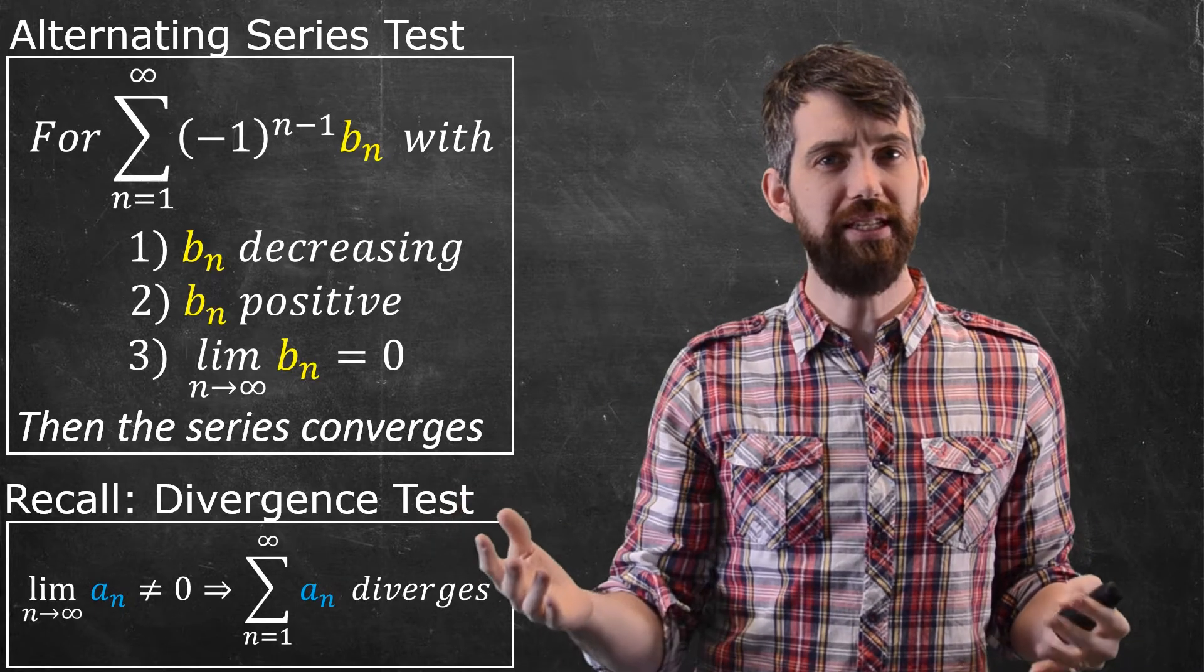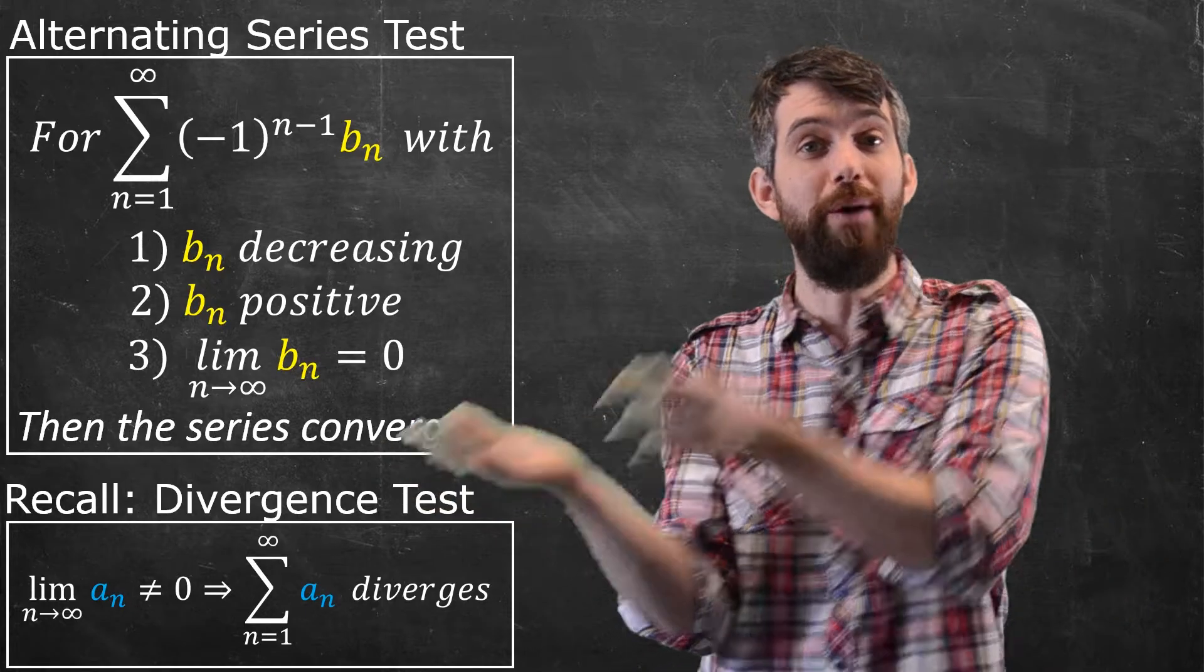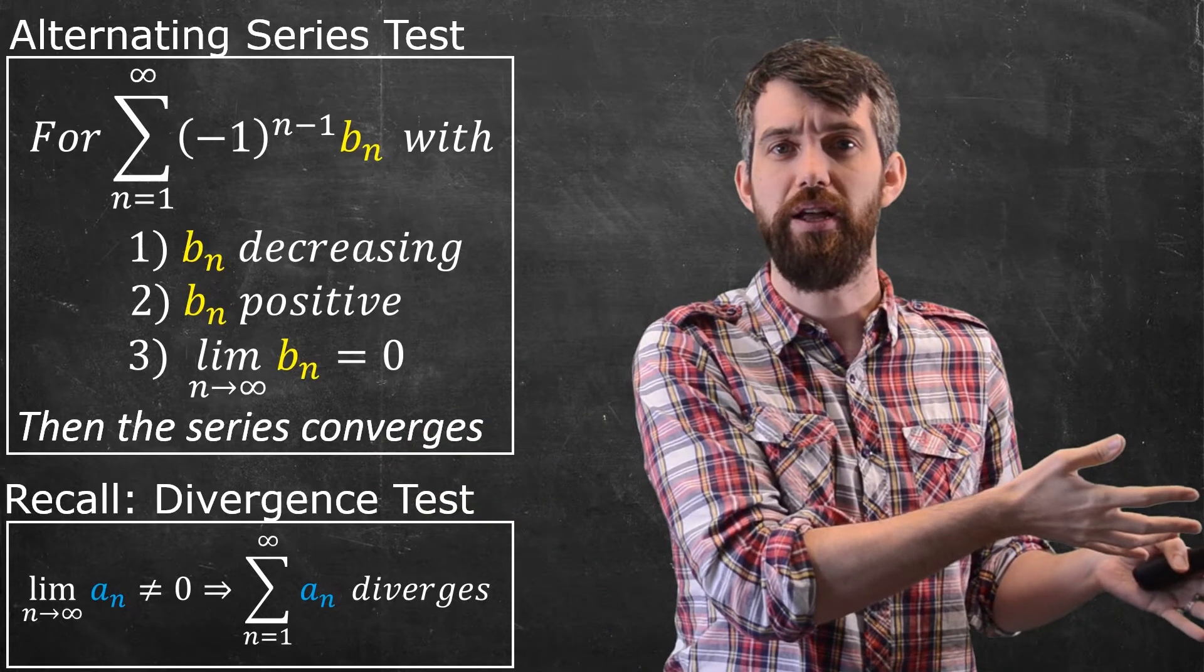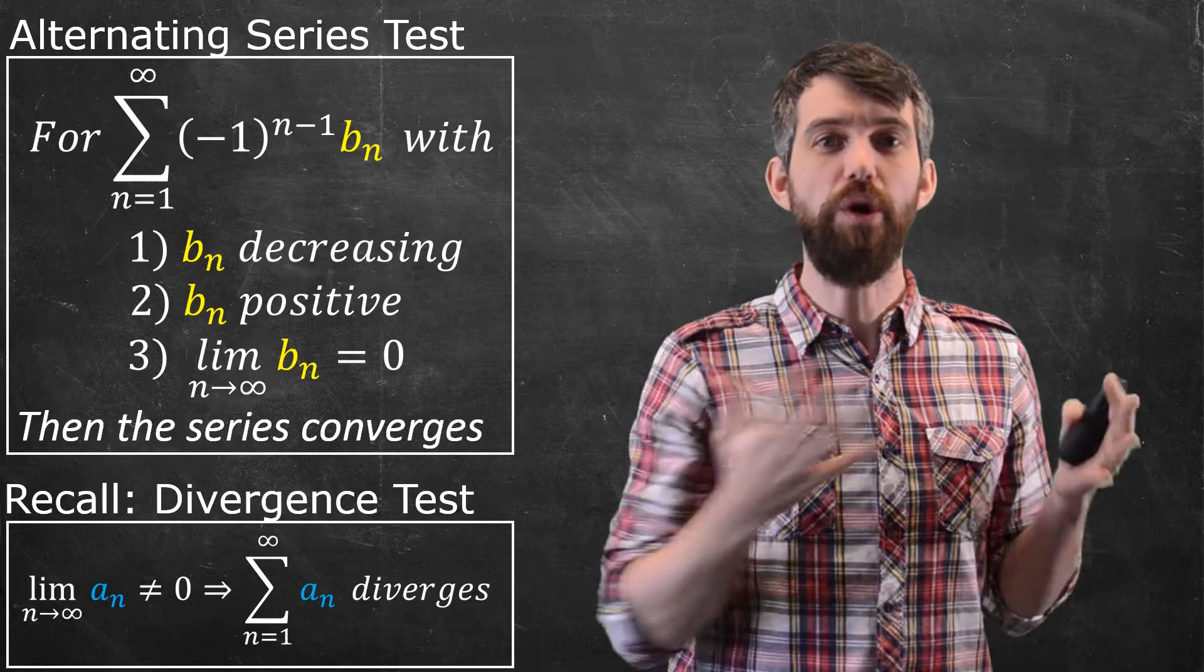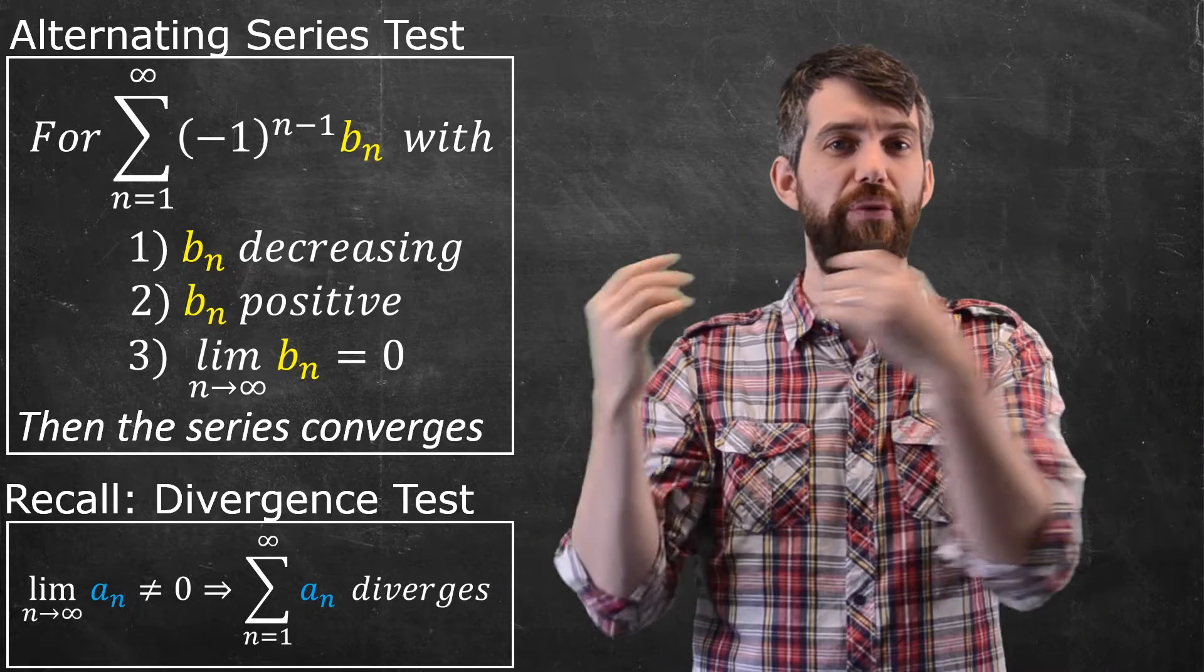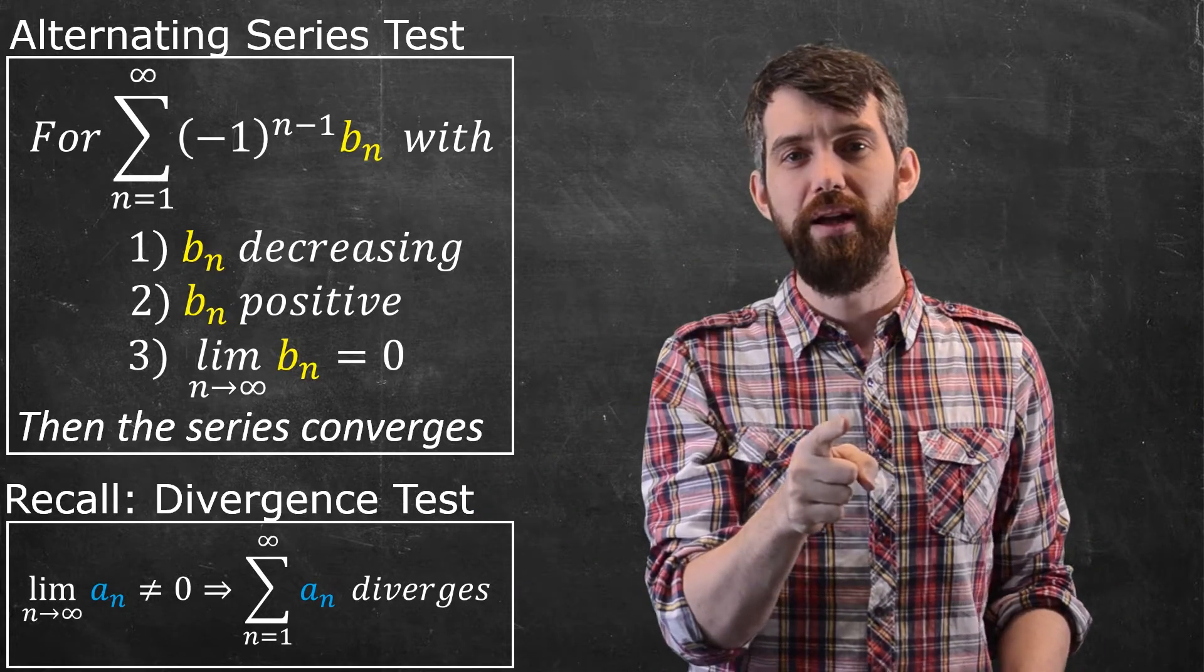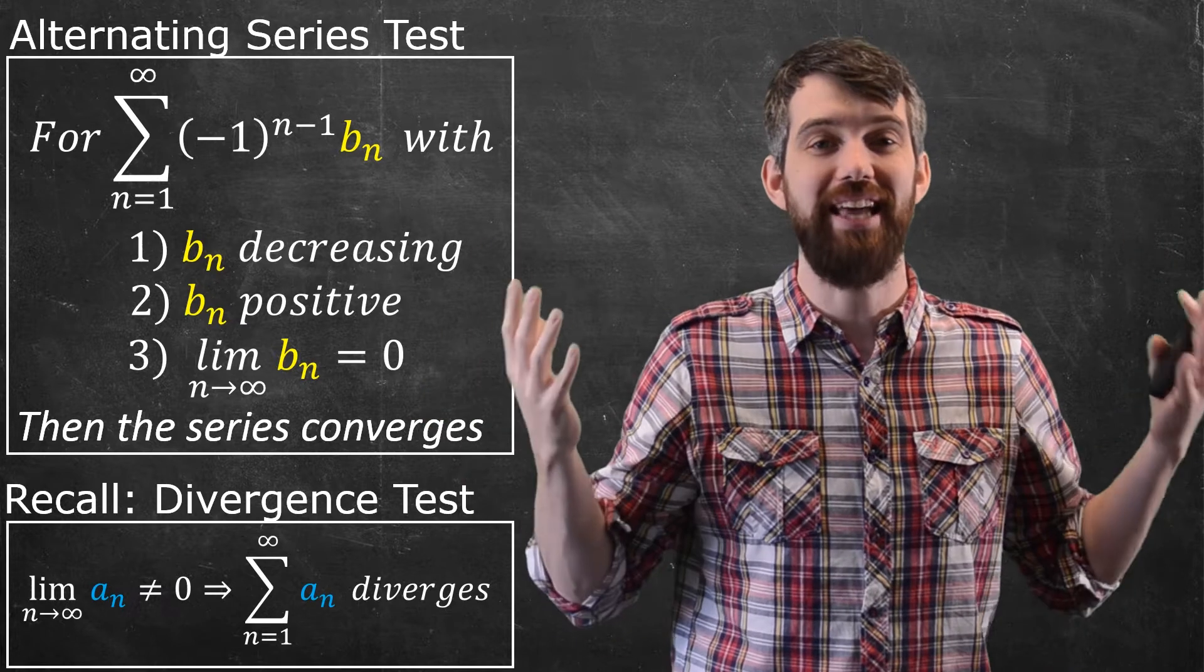But notice this is not an if and only if statement; there's no converse. It only works one direction: if lim a_n ≠ 0, then it diverges. If lim a_n = 0, the divergence test doesn't tell you anything at all.